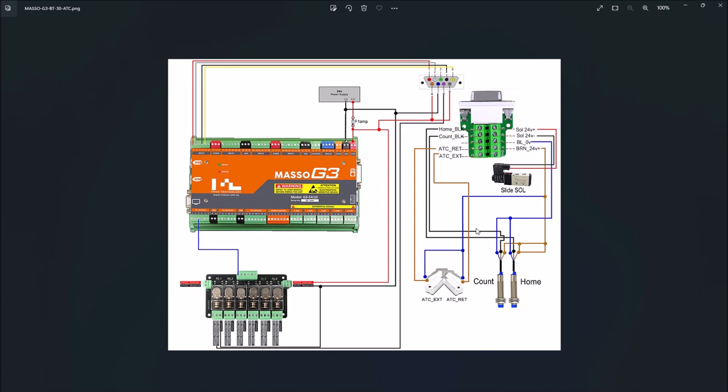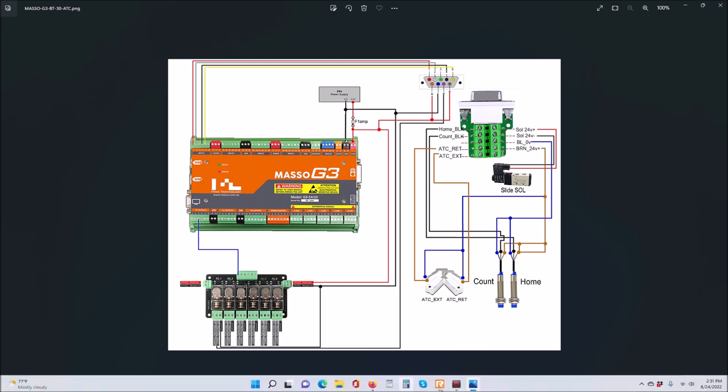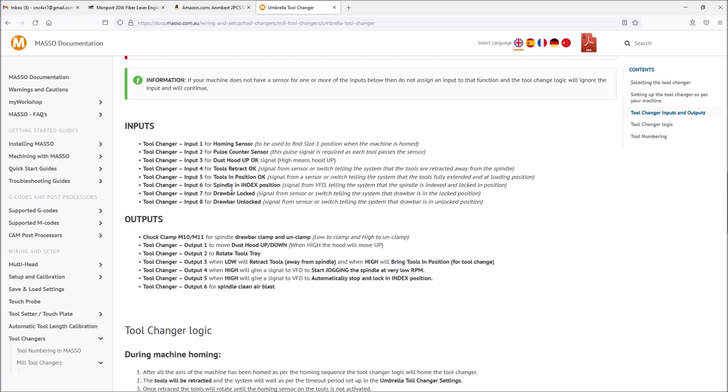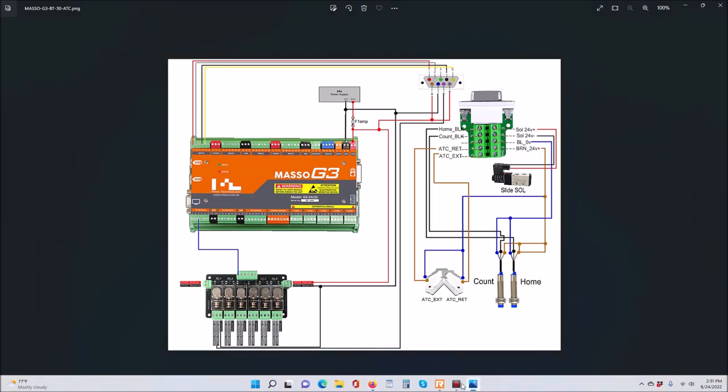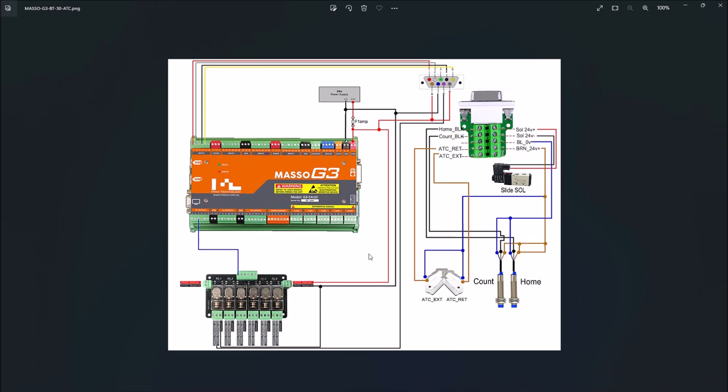So that pretty much is the wiring needed for the BT-30 ATC tool changer for the Masso G3 controller. Again, there are other features if you need to have those for spindle indexing or the drawbar locked and unlocked, but those will be wired to another location besides the ATC. But specifically for the tool changer, this is basically all the wiring that is needed to get that up and running.